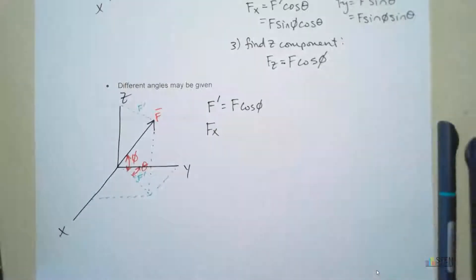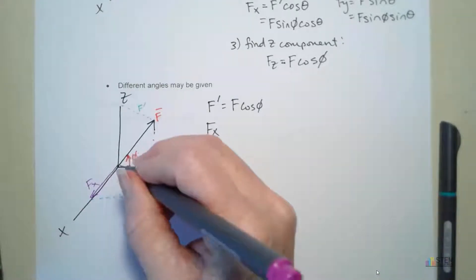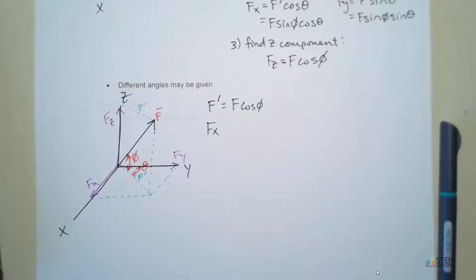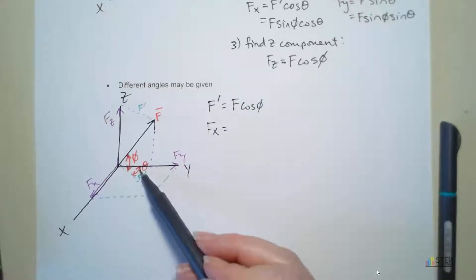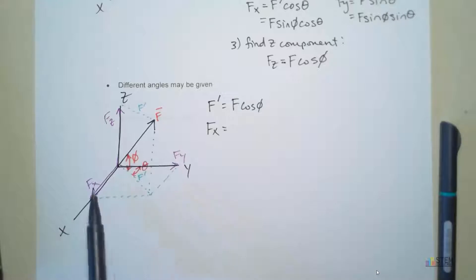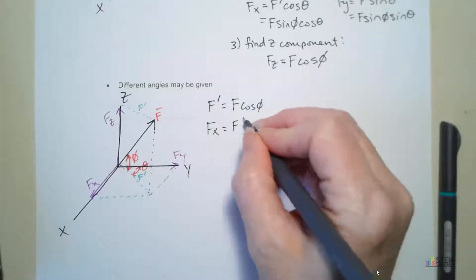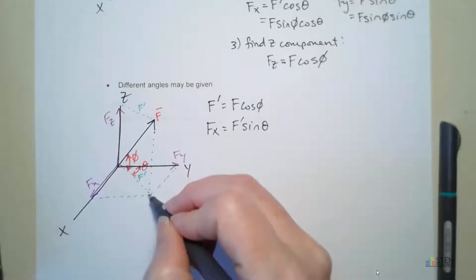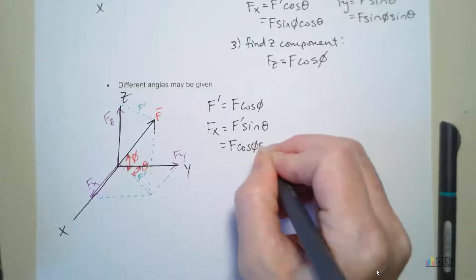For Fx, let's draw Fx on here — this is Fx right here, Fy is going to come out here, and Fz goes up like that. Now back to Fx. I have this angle theta for the XY plane, which relates my F prime to the XY axis. Notice Fx is opposite theta, so we're going to have F prime sine theta, because now F prime is like our force vector we're using. So we've got F prime sine theta, and plugging in F prime gives us F cosine phi sine theta.